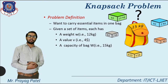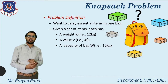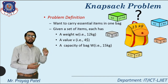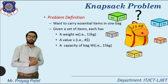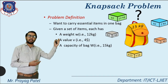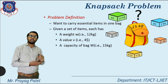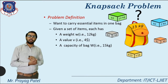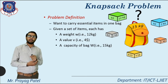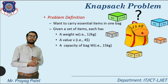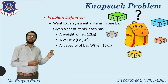First, the problem definition of the Knapsack problem. If you want to carry essential items, consider a bag with capacity equal to 15 kg. Multiple items are available — for example, first item is 12 kg, second is 2 kg, third is 1 kg, fourth is 4 kg, and last is 1 kg. Each item has a weight (small w), for example 12 kg, and a value V, for example 4 dollars.